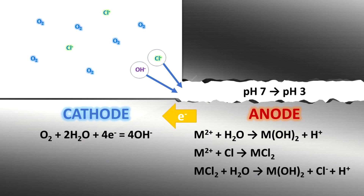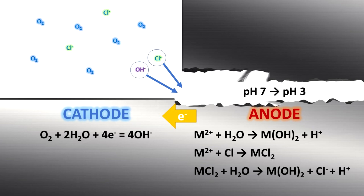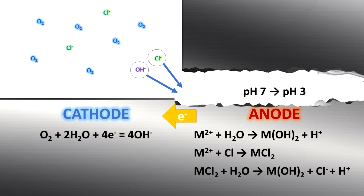The third stage is triggered when the pH within the crevice drops to a critical level, causing the breakdown of the passive layer. At this point, corrosion progresses rapidly until the structure eventually falls apart.